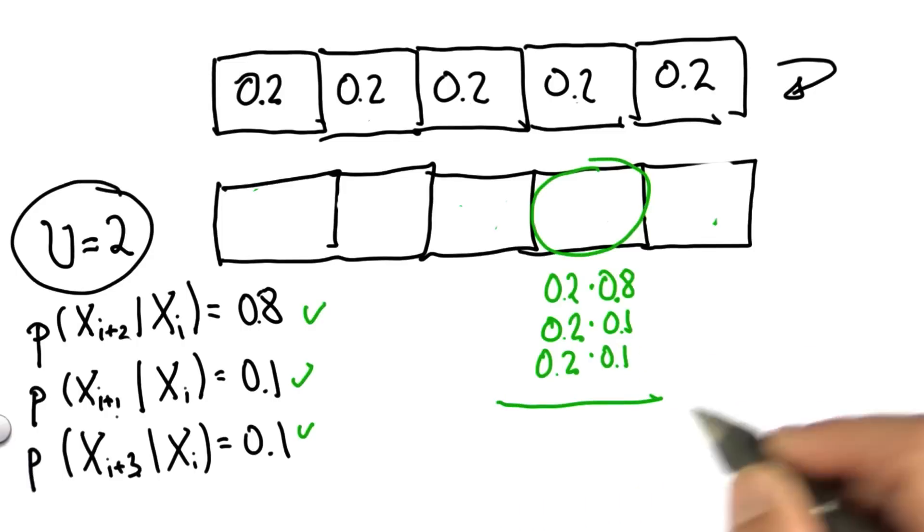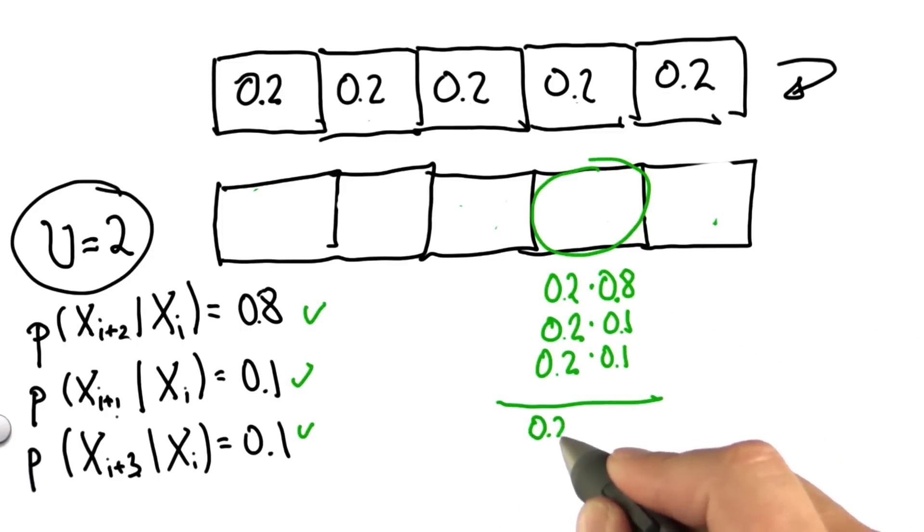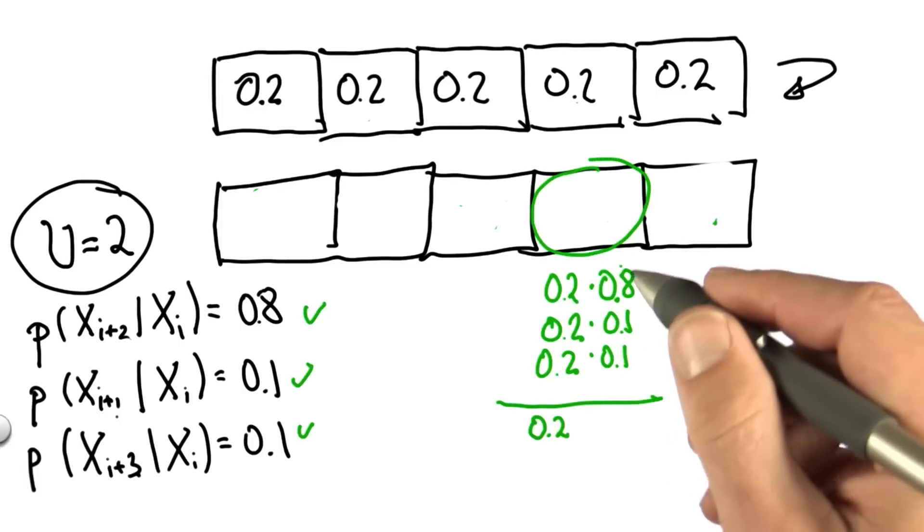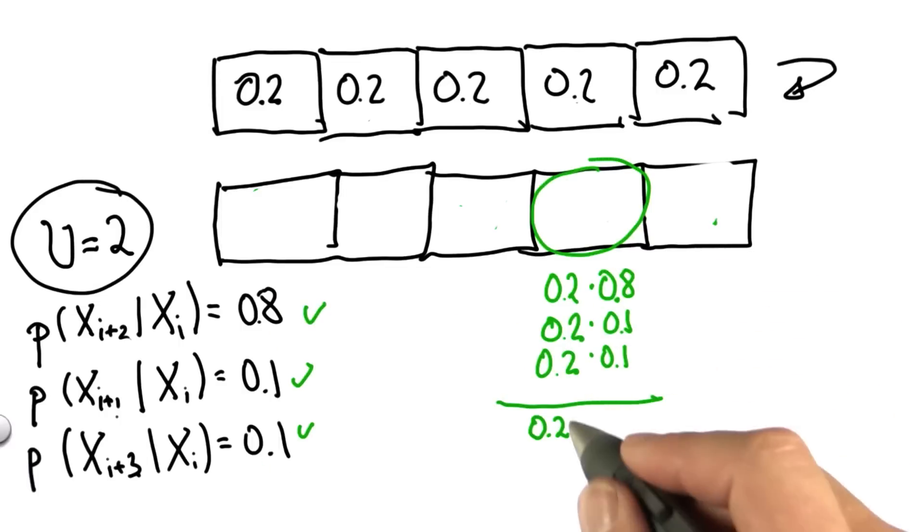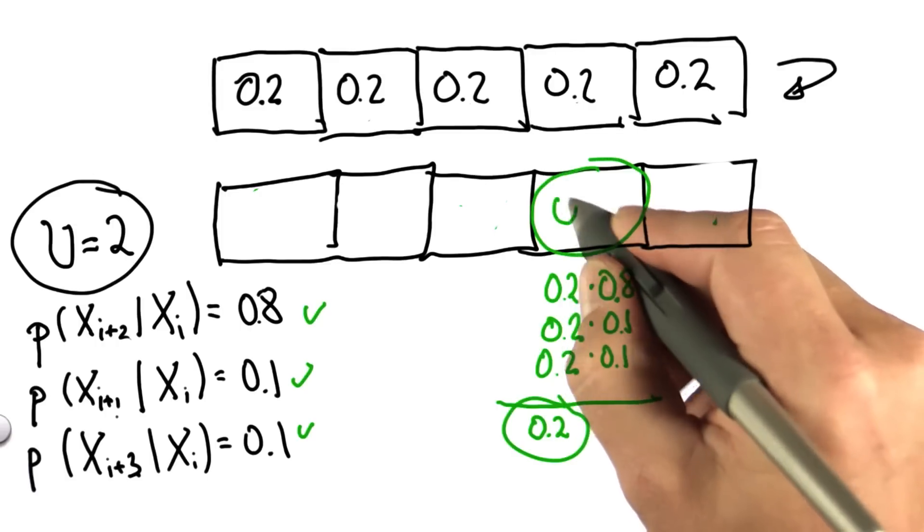When we add those up, then we find that it's the same as 0.2 times 1, because the factors over here add up exactly to 1, which makes 0.2. And the result is 0.2.